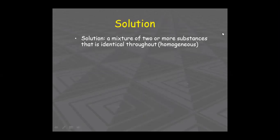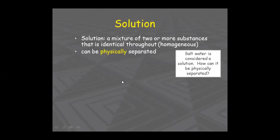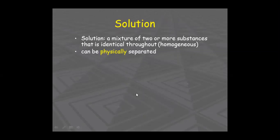Now let's come to the solution. A solution is a mixture — that's why we started from mixtures. Mixtures are of two types: heterogeneous and homogeneous. A solution is a homogeneous mixture of two or more substances that is identical throughout, and it can be separated by physical means.